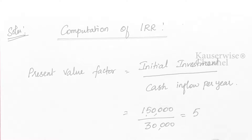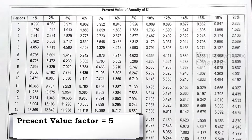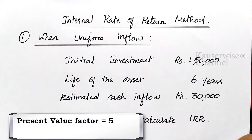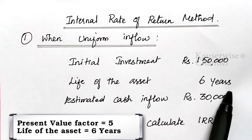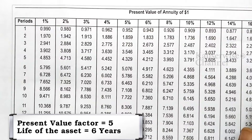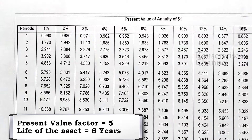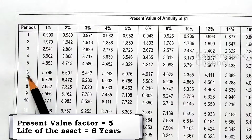Step two: use the calculated present value factor in the present value annuity table to find the IRR. In order to find the IRR, we need to take the life of the asset, which according to this problem is six years. In the annuity table, each column represents a rate of return (the IRR), and each row represents the life of the asset.